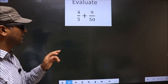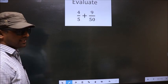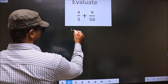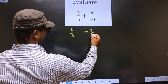Evaluate 4 by 5 plus 9 by 50. First given is 4 by 5 plus 9 by 50.